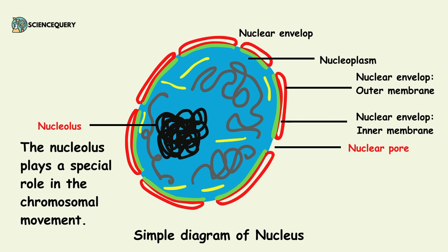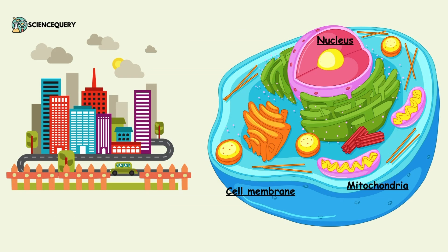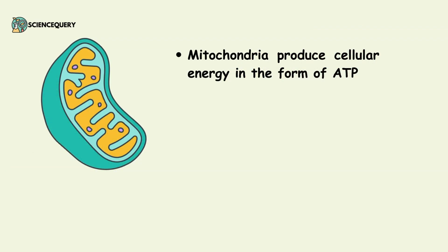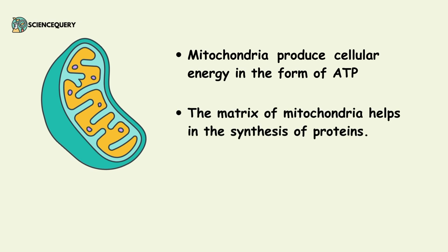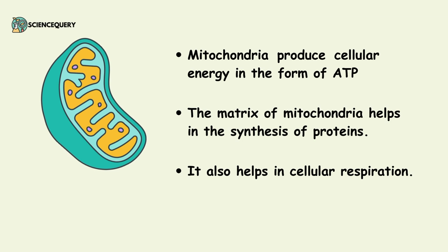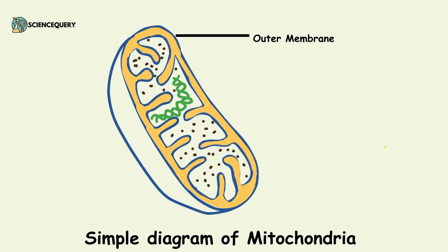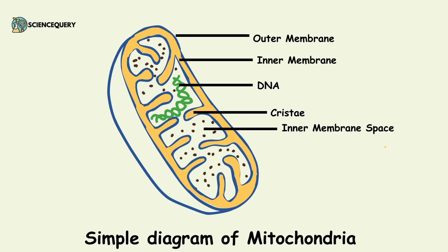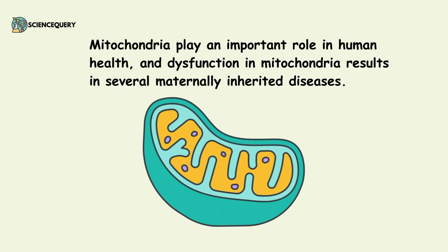The next important organelle after the nucleus is the mitochondria, which acts as a power plant of a city — hence they are also known as the powerhouse of the cell. Mitochondria produces cellular energy in the form of ATP. The matrix of mitochondria helps in the synthesis of protein and also helps in cellular respiration. Mitochondria consists of an outer membrane, inner membrane, DNA, cristae, inner membrane space, matrix and ribosomes. Mitochondria plays an important role in human health, and dysfunction in mitochondria results in several maternally inherited diseases.